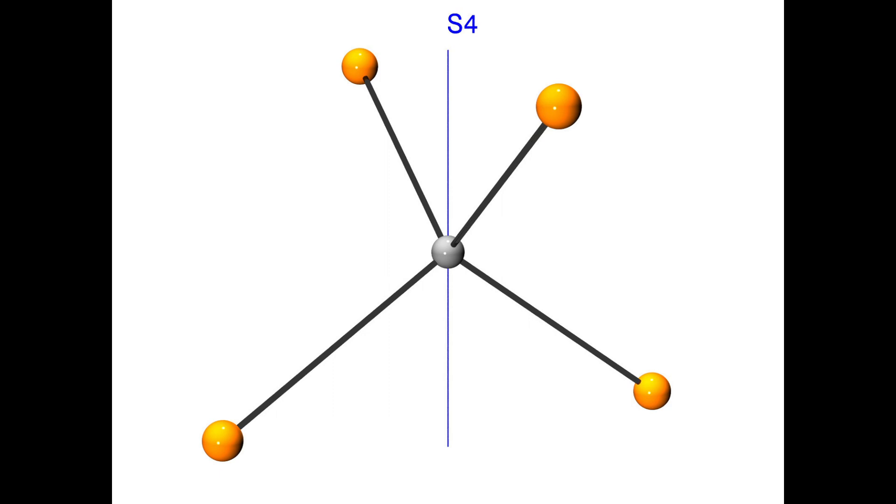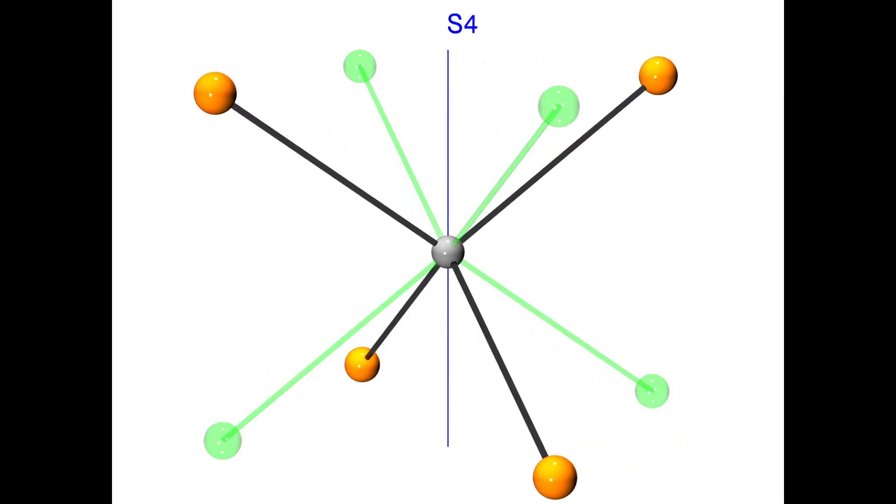Let's select one of them and look at it in more detail. First, we rotate the molecule by 90 degrees. I'm leaving a green ghost molecule behind to keep track of the molecule's original position.